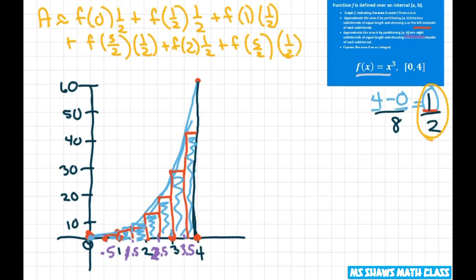Put parentheses here if you want. And then continue. Plus f of 3, times 1 half. Plus f of 7 halves. That's your 3.5, times 1 half. Now it's a little easier if you just factor out a 1 half.